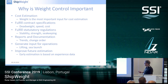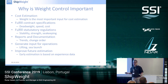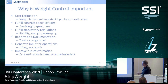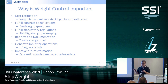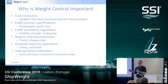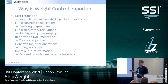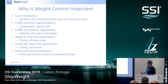Equally important is to fulfill statutory regulations. Weight is the most important parameter for your stability, strength, and seakeeping. You need to do weight control because during detail engineering and building you need to know you are meeting the budget — and if not, you need to find out as soon as possible. Also, the vessel you estimated when entering the contract is not the vessel you end up building, because there will be change orders. It's important to document these change orders and their impact on weight and CG. Weight control also means generating input for operations like lifting and sea launch, and improving future estimations.